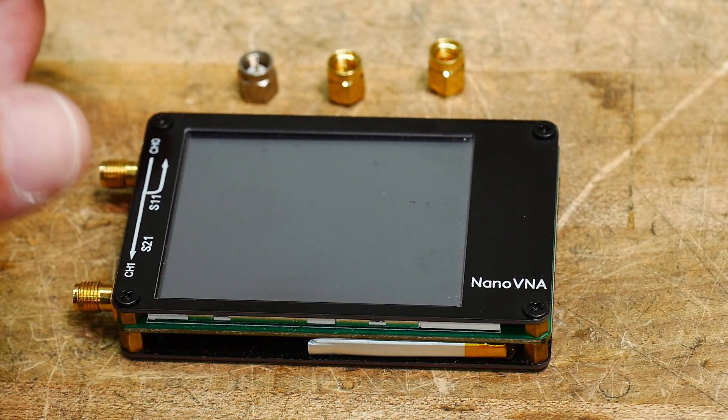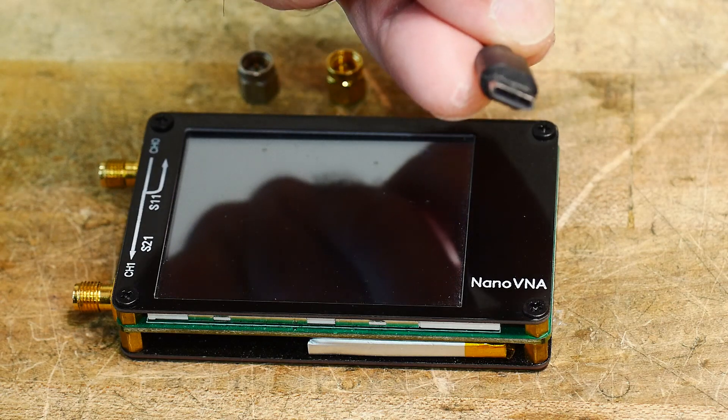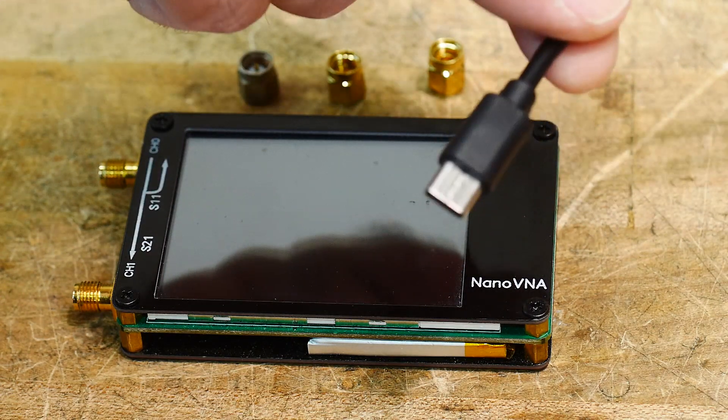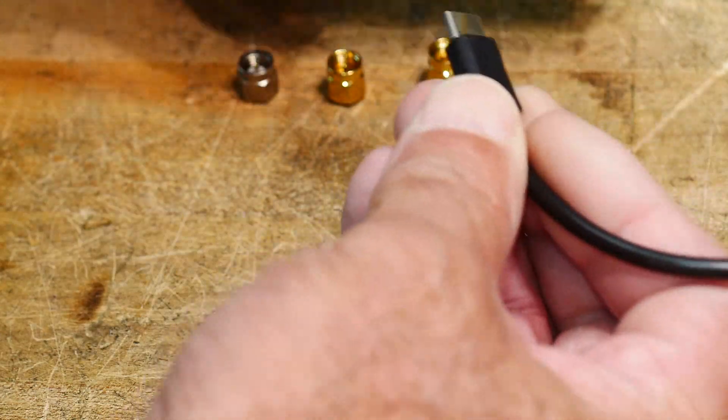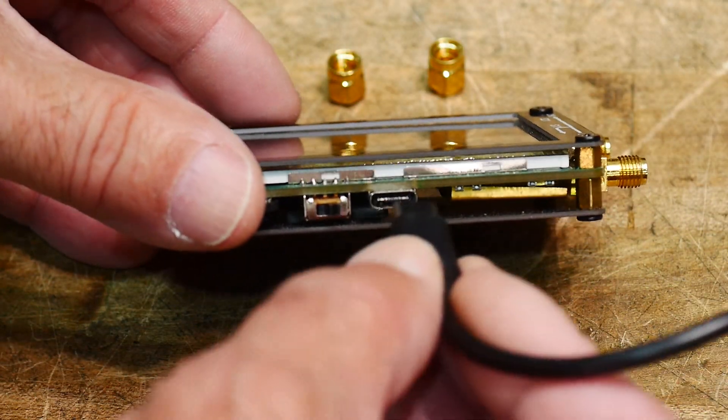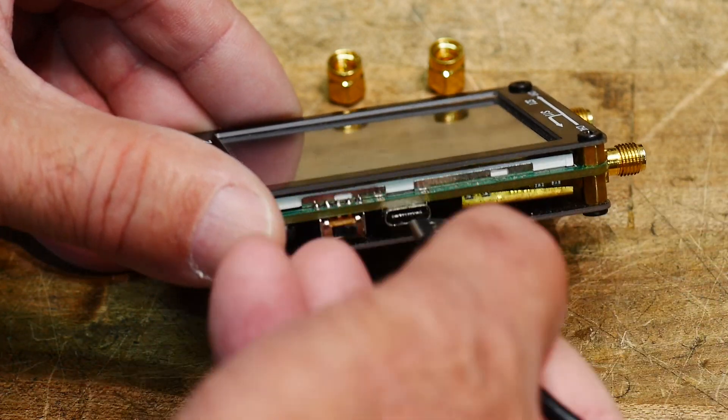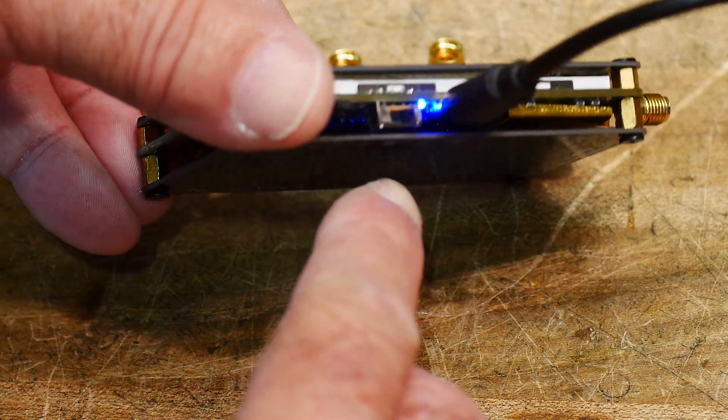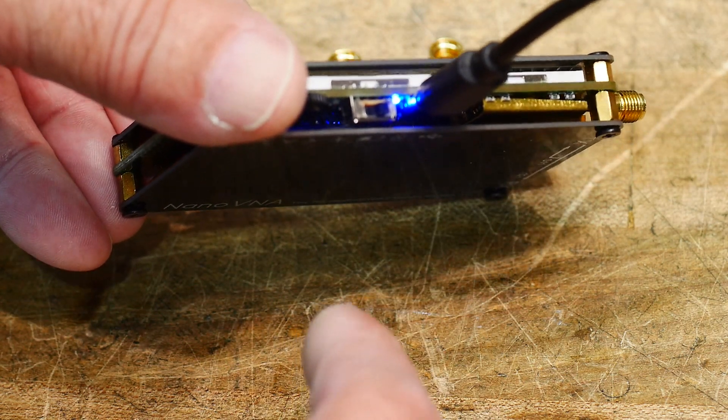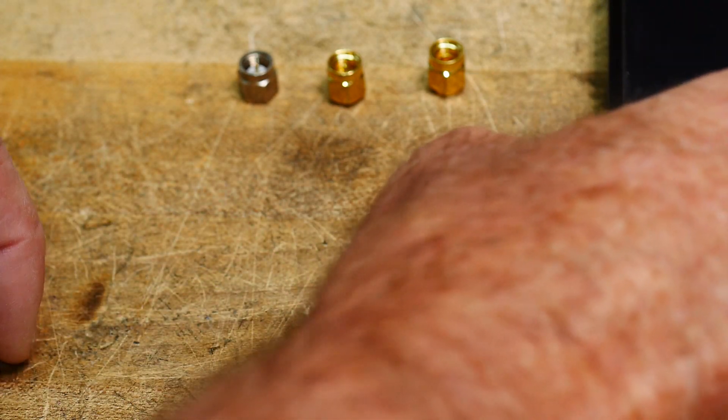Now the NanoVNA comes with a couple things. First of all it comes with a USB-C cable for charging. So you need to connect this to some charger 5 volts and on the side of the NanoVNA is a little connector and the cable goes in there either way. It's not like other USB cables you can plug it in upside down or backwards doesn't matter. And once it goes in there should be a little blue light and the blue light should flash and that means it's charging the battery.